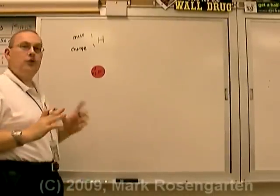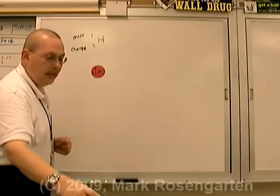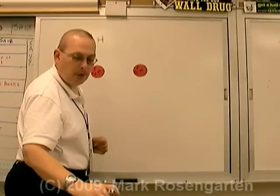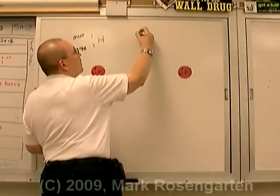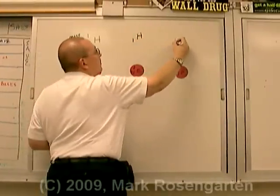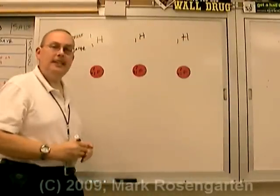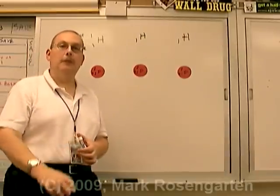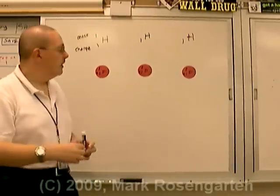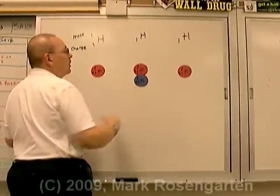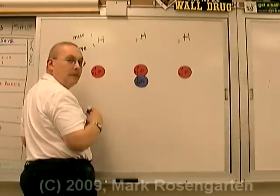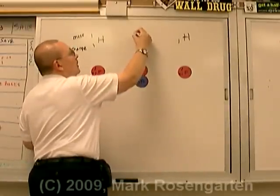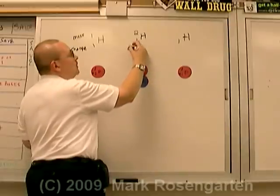There are two other forms of hydrogen. Each of them, again, is made of only one proton. The difference is each one contains a different number of neutrons. This form of hydrogen, which contains one neutron, has a combined mass of two atomic mass units. This is referred to as deuterium.